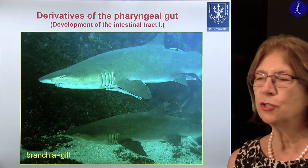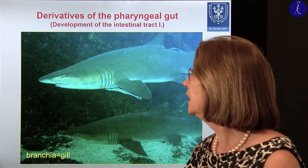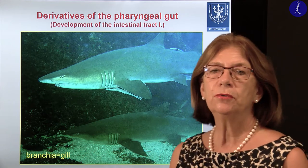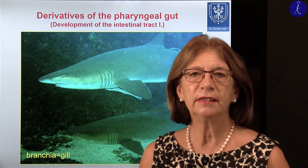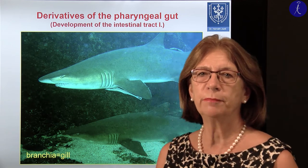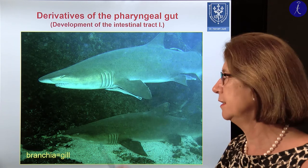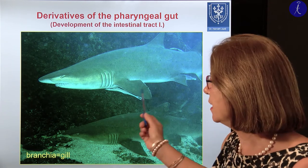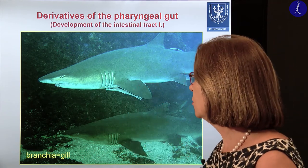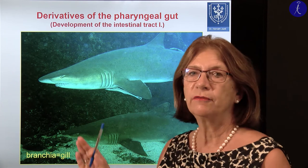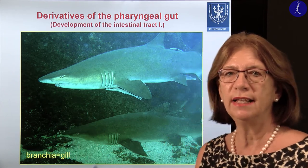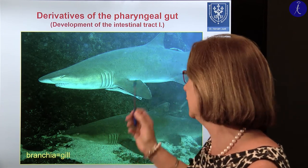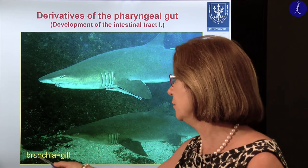Good morning. This next lecture will be about the derivatives of the pharyngeal gut — the first part of the development of the intestinal tract. Here you see a shark, because the pharyngeal gut — the Latin term is the branchial gut — and 'branchia' means gill.